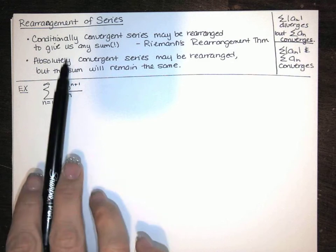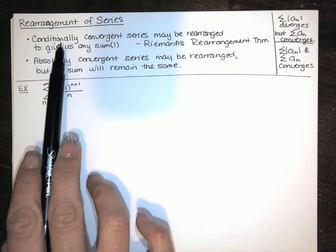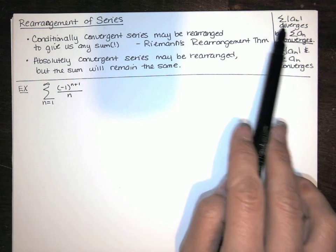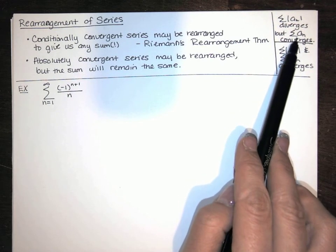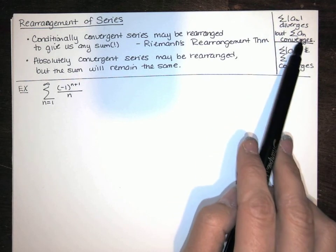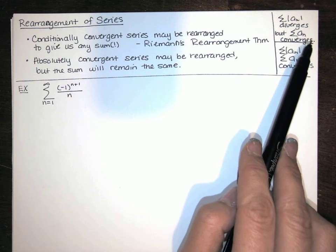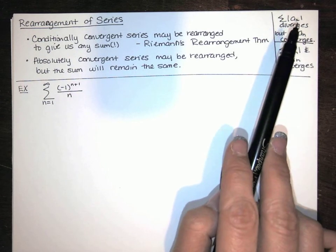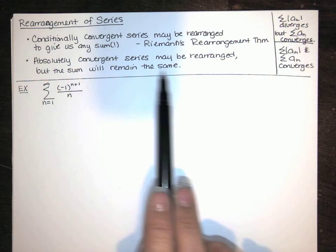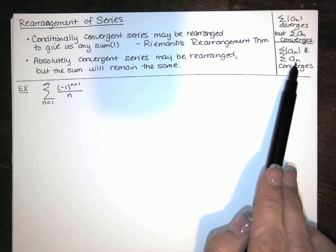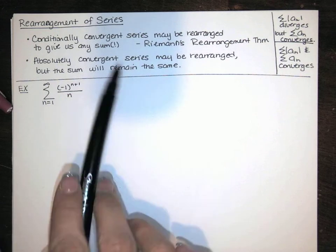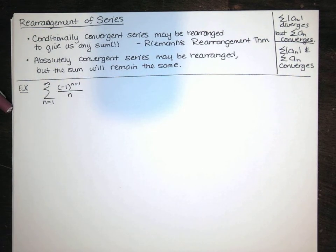So we're talking about conditionally convergent and absolutely convergent series. A conditionally convergent series is one where you can't take its absolute value series and get it to converge, but the original series — because of the negatives and positives — the negative terms cancel with the positive terms in such a way that they all add together to give you some number. But if you take the absolute value of all those terms, it diverges. Absolutely convergent series converge with positive and negative terms, and when you take the absolute value, they still converge.